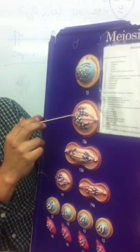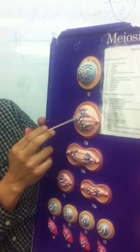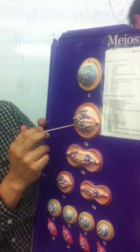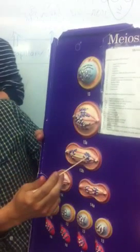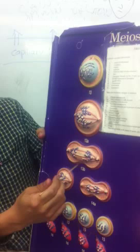Here you have continuation of meiosis 1 with metaphase 1, primary spermatocyte. Anaphase 1, still primary spermatocyte.